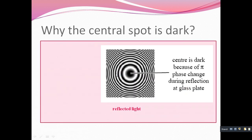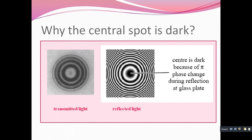Why is the central spot dark? The central spot is dark because of a phase change of π during reflection at the glass plate. At the point of contact, both ray 1 and ray 2 interfere destructively. Due to this destructive interference, the spot is dark. However, in the case of transmitted light, the central spot will be bright, not dark.